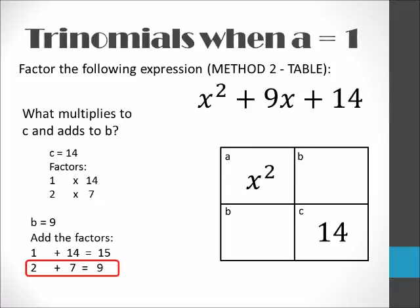Next, you want to see what multiplies to c and adds to b. Since we already found out our factors are 2 and 7, we need to now figure out where to place them in our box. We know that 7 and 14 have a GCF, so 7x will be paired with 14, and 2x will be paired with our x squared.